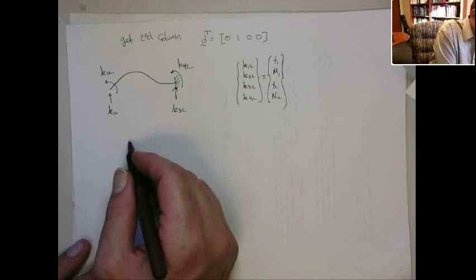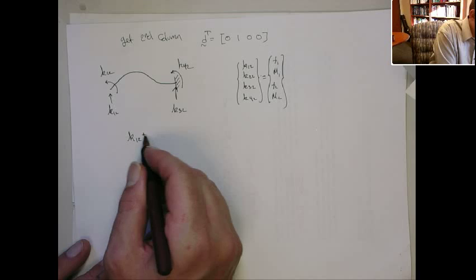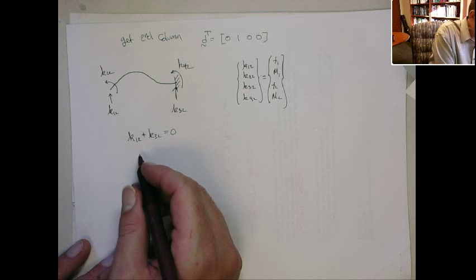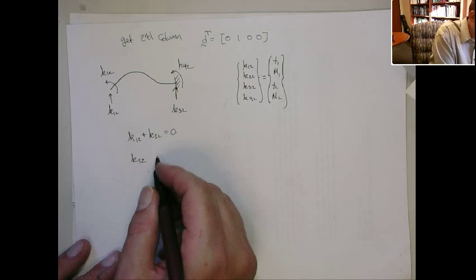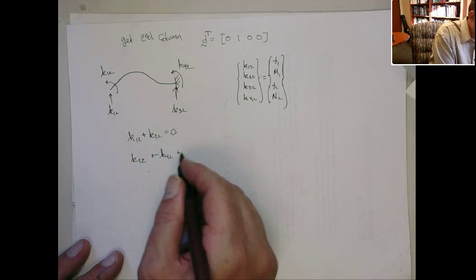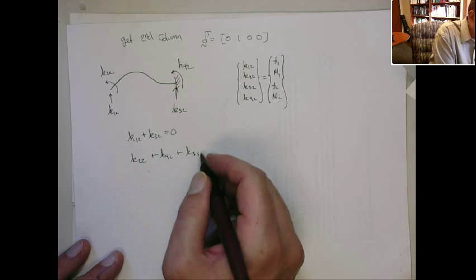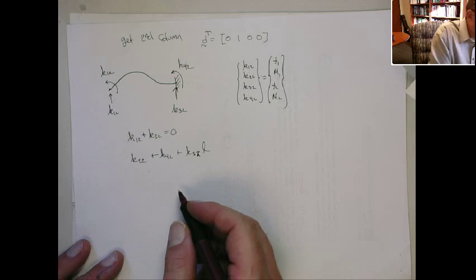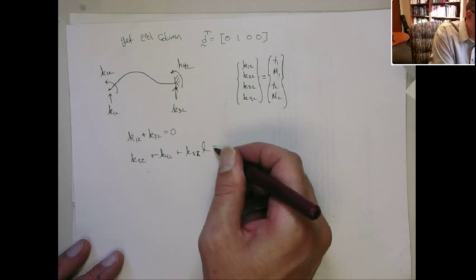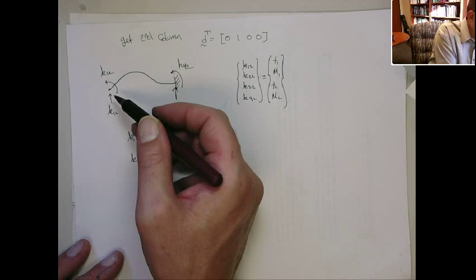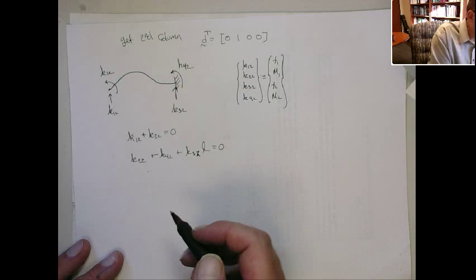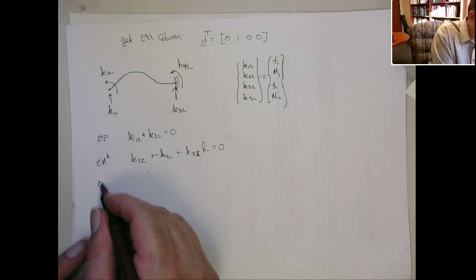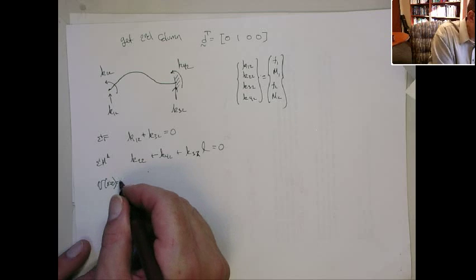All right, we can still do sum of forces, so that gives us the sum of force equation: K1,2 plus K3,2 has to equal zero. Sum of moments around A gives us K2,2 plus K4,2 plus the force K3,2 times its moment arm, which is the length — so we're doing sum of moments around point A. And then we also know the kinematic conditions: the displacement at x equals zero has to equal zero.